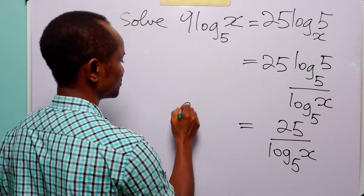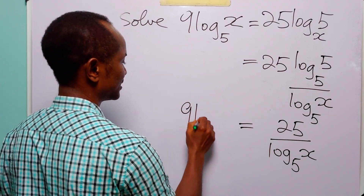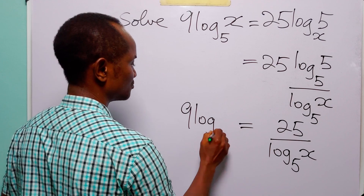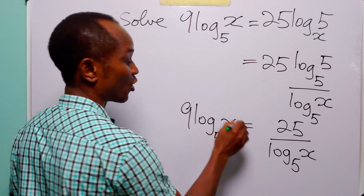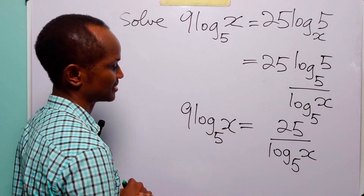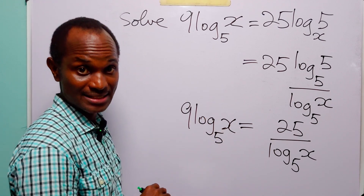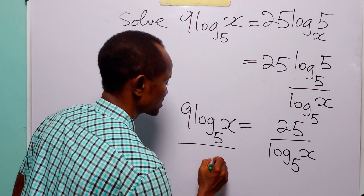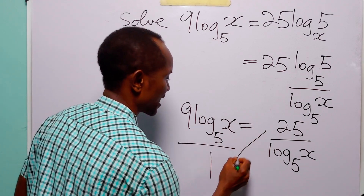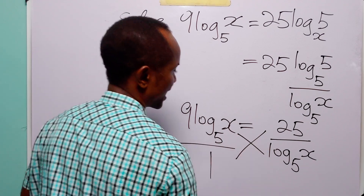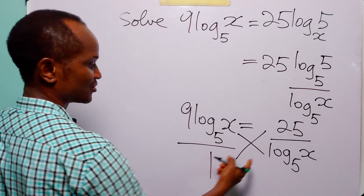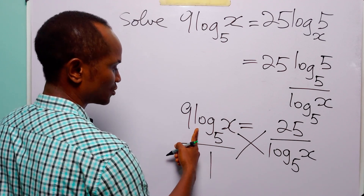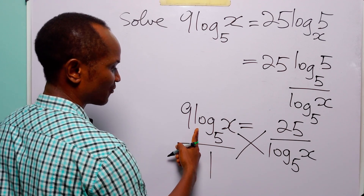This is still equal to 9 times log to base 5 of x. Now obviously the next thing you're going to do is to cross multiply, and when you do that you have that 9 times log to base 5...